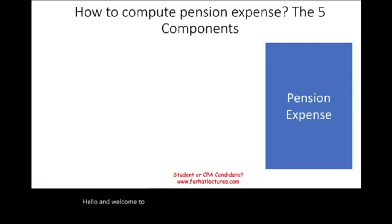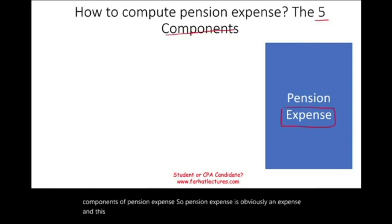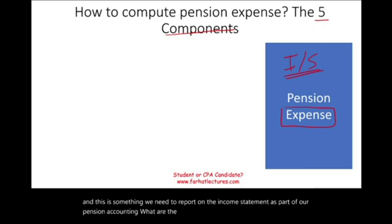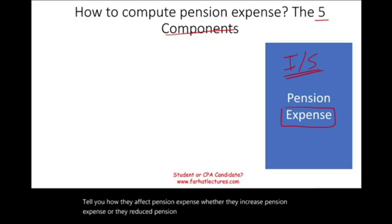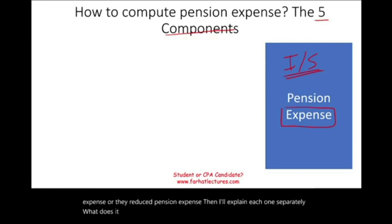Hello and welcome to the session in which we look at the five components of pension expense. Pension expense is an expense we need to report on the income statement as part of our pension accounting. I'm going to list the five components, tell you how they affect pension expense — whether they increase or reduce it — and then explain each one separately.